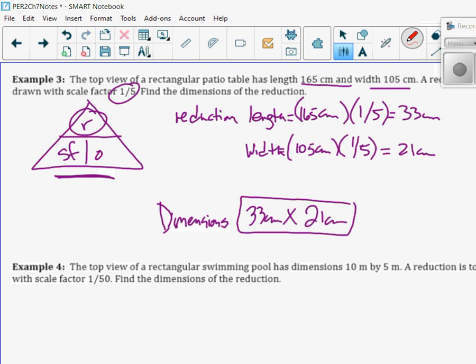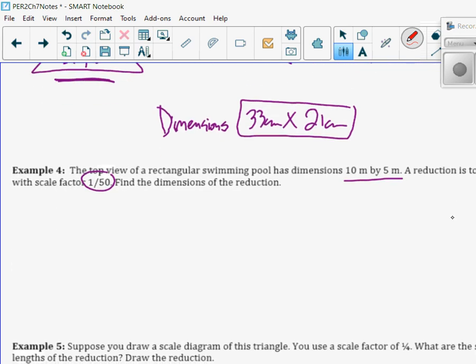The top view of a rectangular swimming pool has dimensions of 10 meters by 5 meters. A reduction can be drawn to a scale of one-fiftieth. Because we're making such a reduction, keeping it in meters is going to make it very small. You're not going to use meters to measure a diagram.